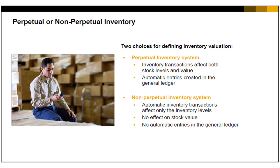The other choice is to use a non-perpetual inventory system, in which sales, purchasing, inventory, and production transactions automatically create inventory transactions which affect only the inventory levels and have no effect on the stock value. Transactions in a non-perpetual inventory system do not generate automatic inventory-related monetary entries directly into the general ledger.